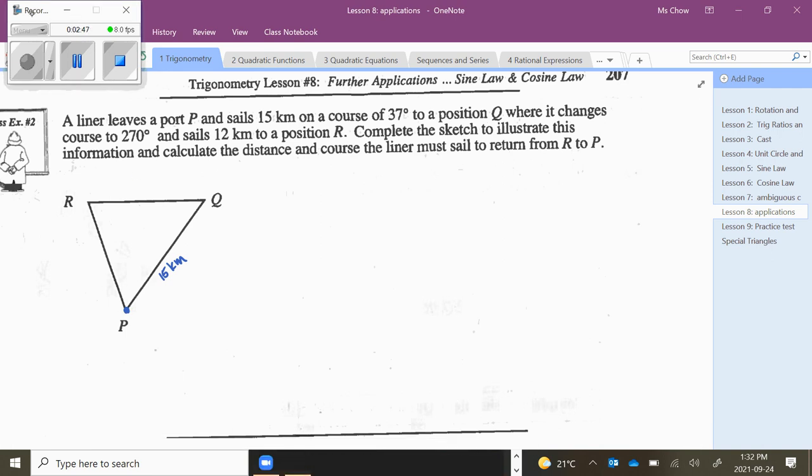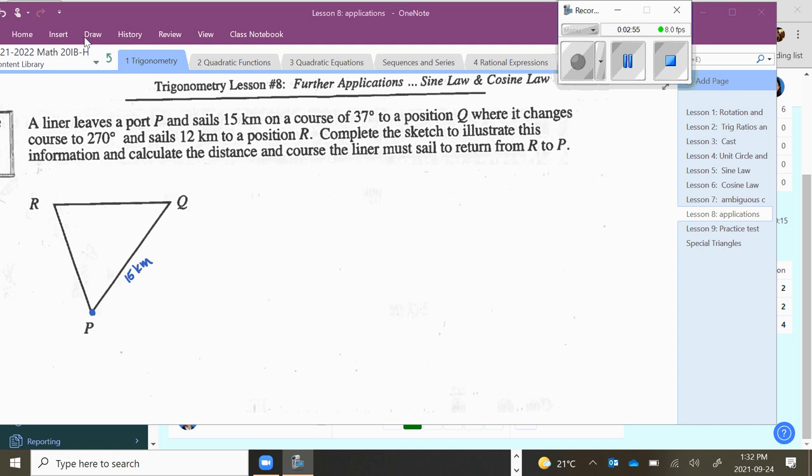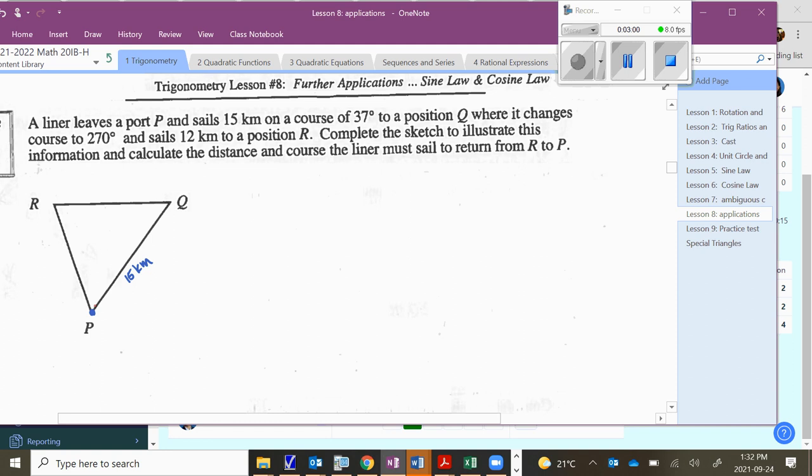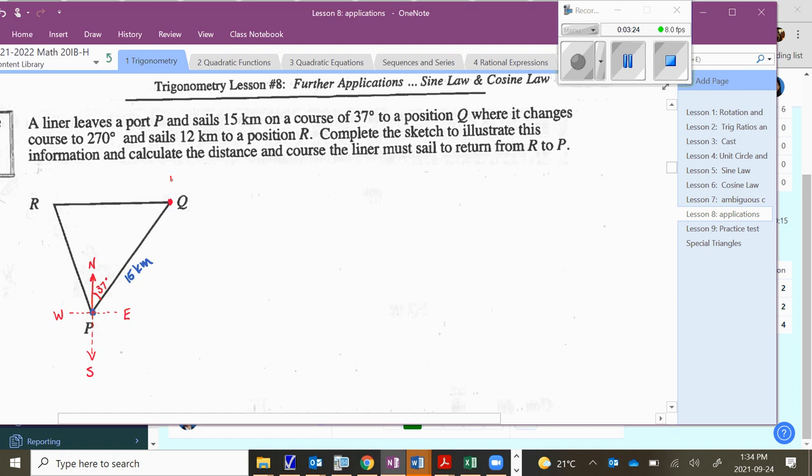So what I strongly suggest that you guys do, for all of these questions is draw in north, in some cases it will also help to draw in south, in some cases it may be helpful to draw in east and west as well. And it now changes course to 270 degrees, so from Q. Here's north again, so you can see this whole thing would be 270. What's probably important is that that is going to be 90 degrees. Might be helpful for us to draw in south as well.